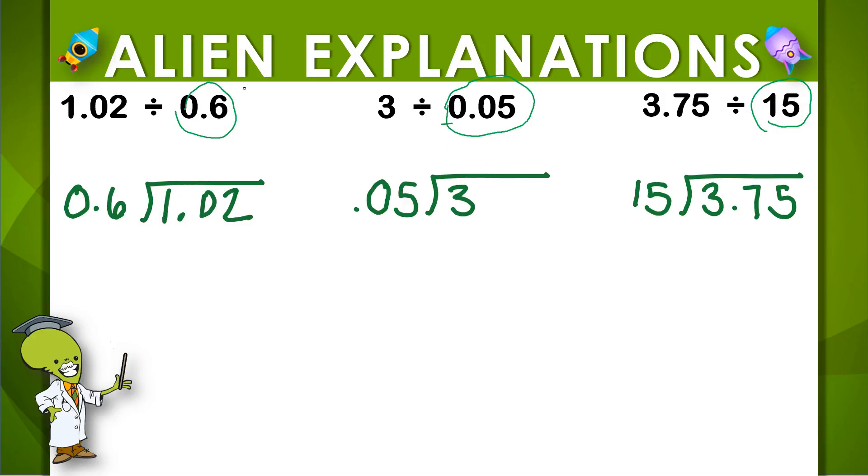But for the other two, how can we make 6 tenths a whole number? Well, if I want to move this decimal place over one spot, I could multiply 6 by 10. But I can't just do that to the 6. I would also have to do that to 1 and 2 hundredths.